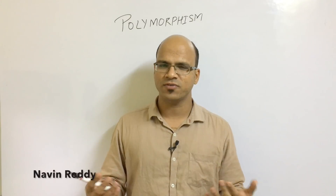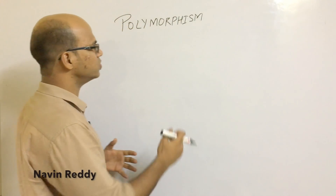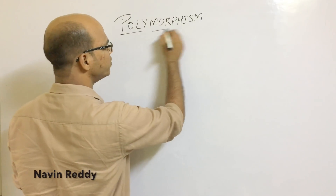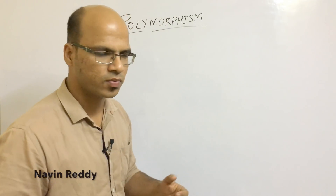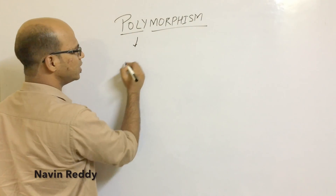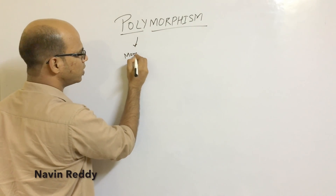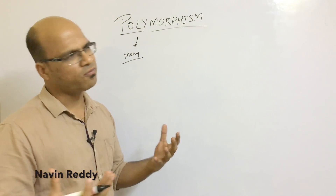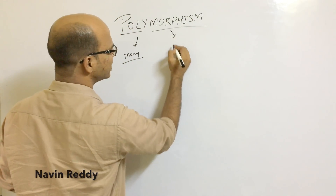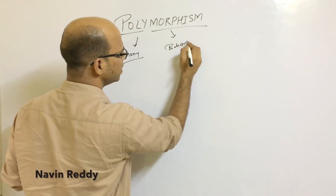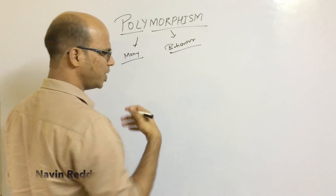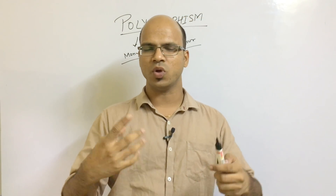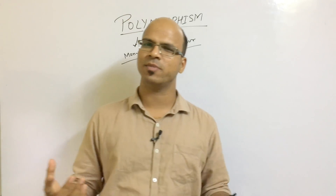Now, when you say polymorphism, what does it mean? So let's break down this term. We have 'poly' as one word, and then we have 'morph' as the second word. When you say 'poly,' the meaning is 'many.' So many morph — this 'morph' will be called as behavior. So polymorphism means many behaviors. It is something where you have one thing and it has multiple behaviors.